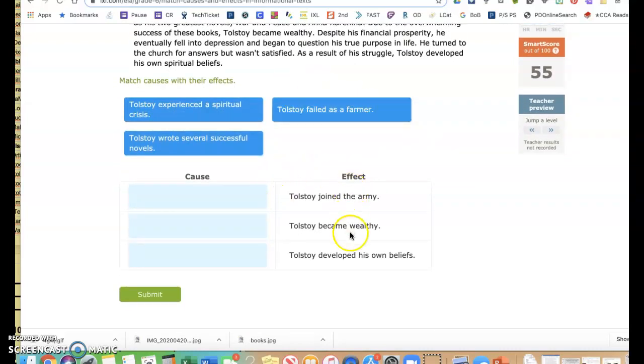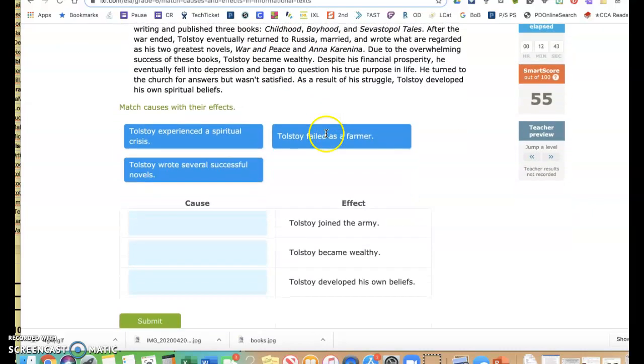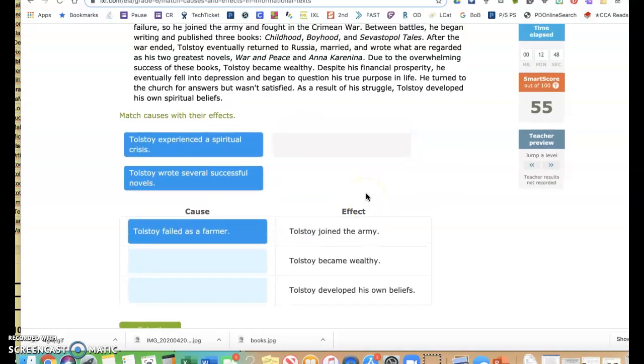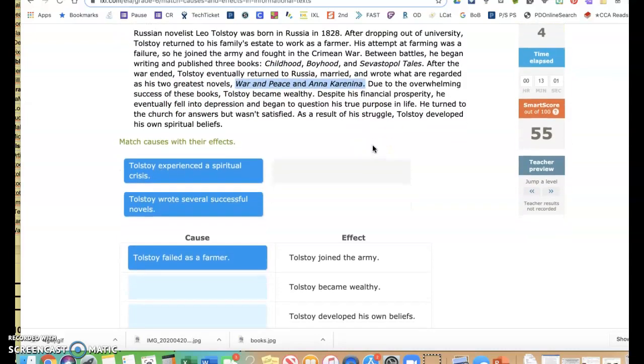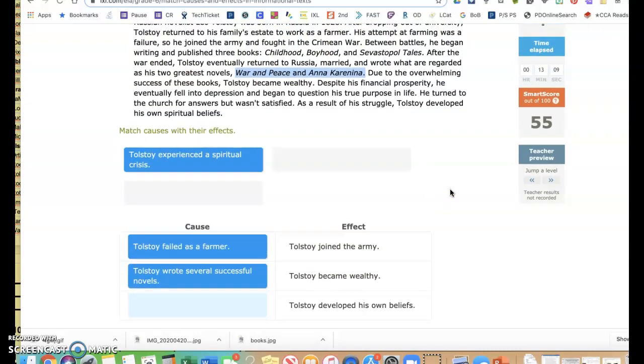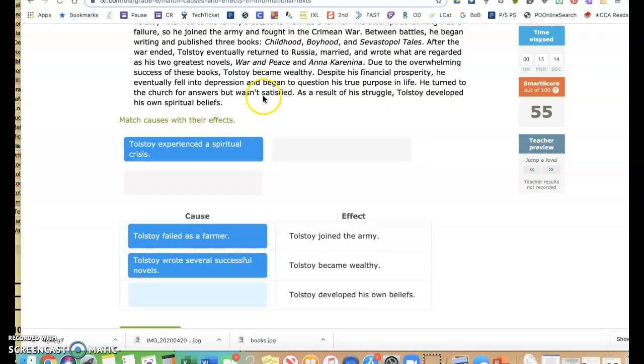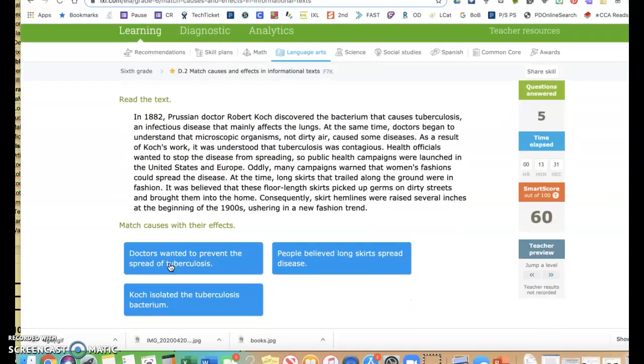So why did he join the army? It says he returned to his family's estate to work as a farmer, but his attempt at farming was a failure, so he joined the army. So he failed as a farmer. Tolstoy became wealthy. Where did it say he became wealthy? Due to the overwhelming success of these books, so I look back, War and Peace and Anna Karenina, Tolstoy became wealthy. So Tolstoy wrote several successful novels. Tolstoy developed his own beliefs. He turned to the church for answers, but wasn't satisfied. As a result of this struggle, Tolstoy developed his own spiritual beliefs. And I'm going to just check and make sure that my answers make sense before I hit submit. Okay, so I was okay.